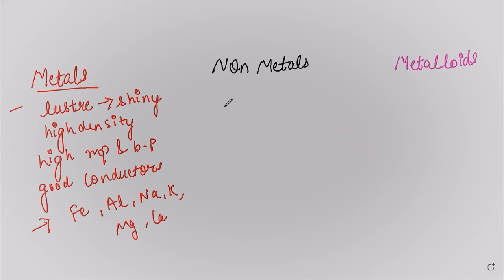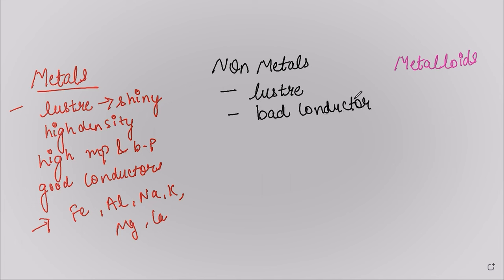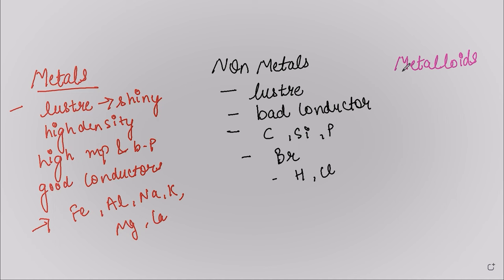Non-metals generally do not have lustre, though exceptions exist — iodine and graphite are lustrous but are still non-metals. Non-metals are bad conductors of heat and electricity, and are neither ductile nor malleable. They exist as solids, liquids, and gases. Examples: carbon, silicon, phosphorus (solid); bromine (liquid); hydrogen and chlorine (gas).